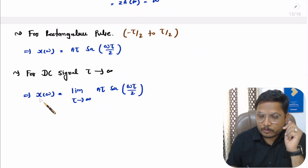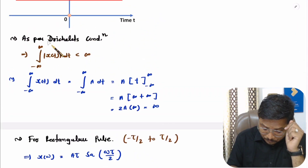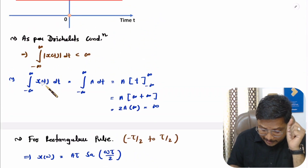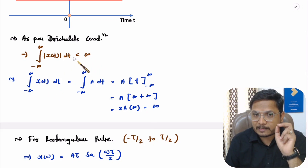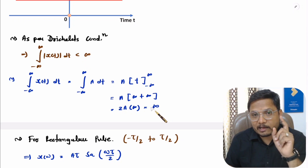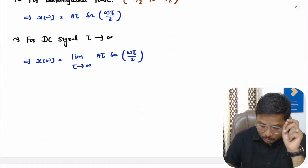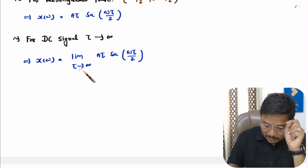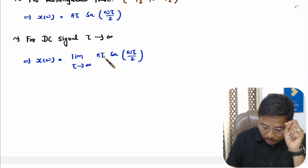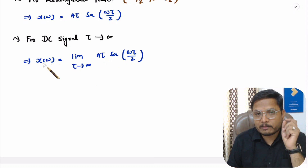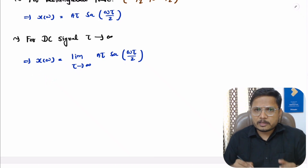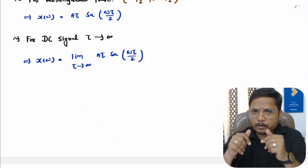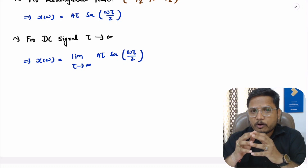But as I have told you, as per Dirichlet's condition, if the signal's integration is infinity, then one cannot identify the Fourier transform of that signal — here it is infinity, so we cannot identify it. And that one can understand here also: if you place τ equals to infinity, then X(ω) will become infinity, which doesn't give you any Fourier transform. So this is what you need to understand for the Fourier transform of a DC signal.